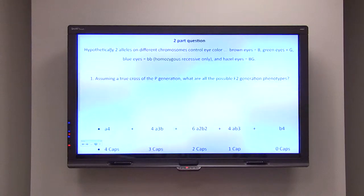This is a two-part question to display both techniques. It says that hypothetically two alleles on different chromosomes control eye color. You've got B for brown eyes, capital G for green eyes, and then lowercase b's for blue eyes.